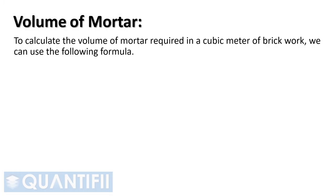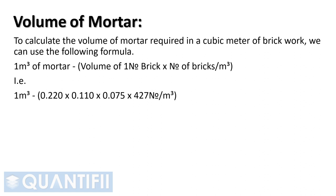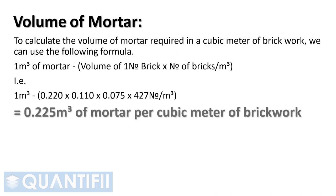To calculate the volume of mortar required in a cubic meter of brickwork, we can use the following formula: one cubic meter of mortar, less the volume of one brick, multiplied by the number of bricks per cubic meter. That is, one cubic meter, less open bracket, 0.22 meters by 0.11 meters by 0.075 meters, by 427 bricks per cubic meter, close bracket. This amounts to 0.225 cubic meters of mortar per cubic meter of brickwork.